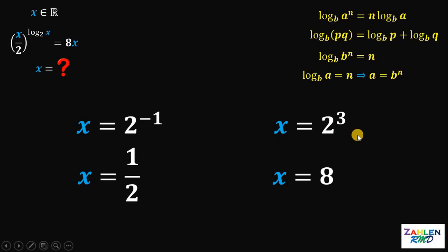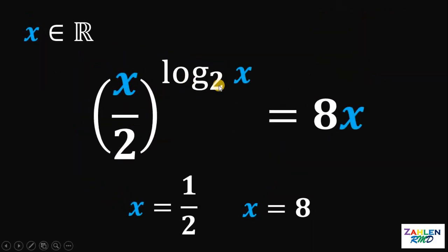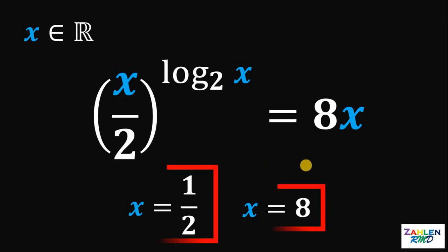Therefore, we found 2 real possible values for x. For the equation x over 2 raised to logarithm of x to the base of 2 equals 8x, the two possible real values are x equals one-half or x equals 8. And we are done.